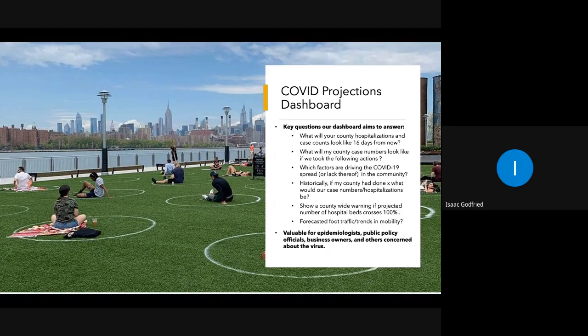Also, as an interesting thing, we do have mobility data. Businesses could make use of the mobility data we plan on having to see how that might impact their businesses. We do plan on training some models that, based on a policy, would forecast the change in mobility in different places. This was obviously valuable for a wide group of people — mainly epidemiologists, public policy people, even business owners, and also just people concerned about the virus in general. That's our main COVID-19-related deliverable.